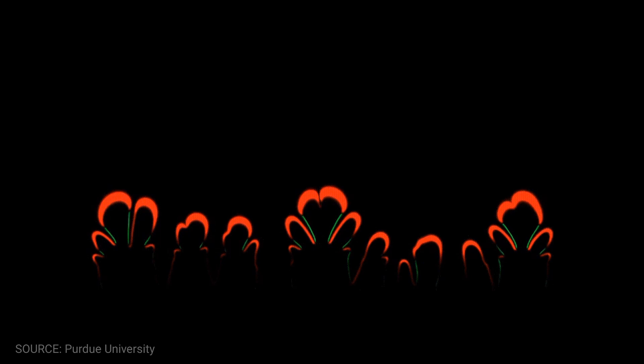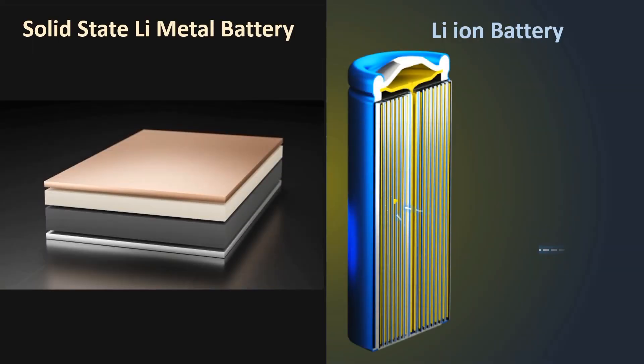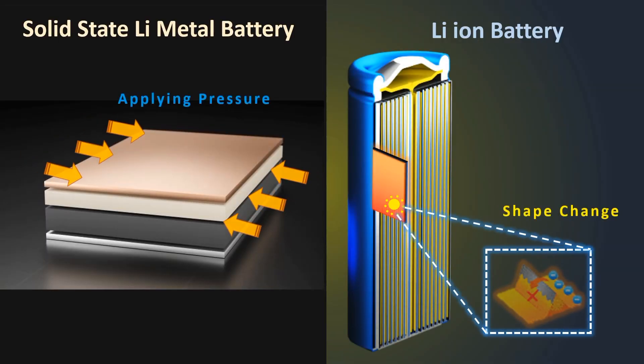But replacing the liquid electrolyte with solid ceramic material is not the end of the problem. There is another issue that threatens the viability of solid-state batteries and they are called dendrites. Metal dendrite penetration is a mode of electrolyte failure and is a serious safety issue in solid-state batteries. Two very different breakthroughs, or we should call them out-of-the-box solutions, have given hope that these problems are closer to get solved.